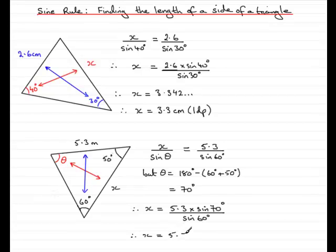And you should find you get 5.7508 and so on. And if we were to round this, say to one decimal place, we would have X equals 5.8. Don't forget those units, it's meters this time. And the accuracy is one decimal place, 1dp.